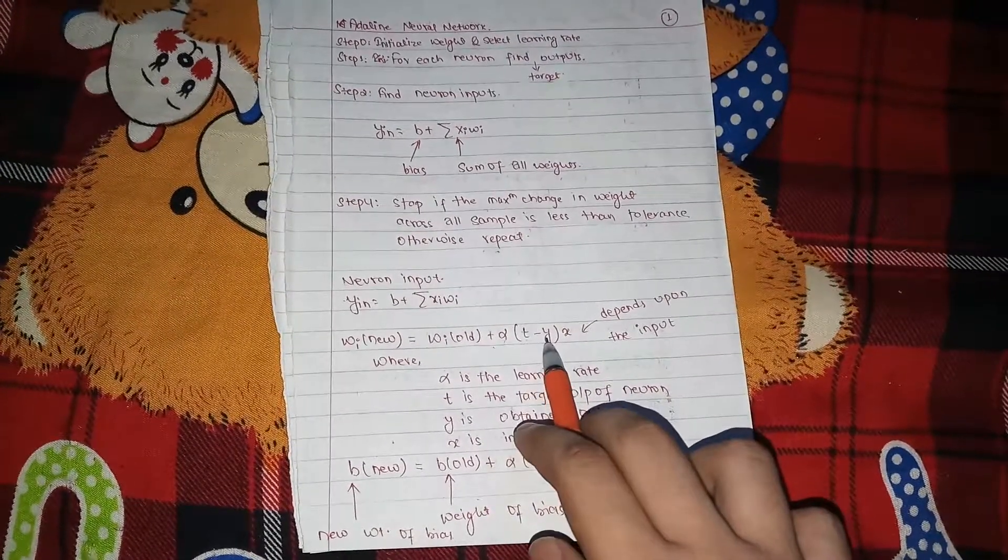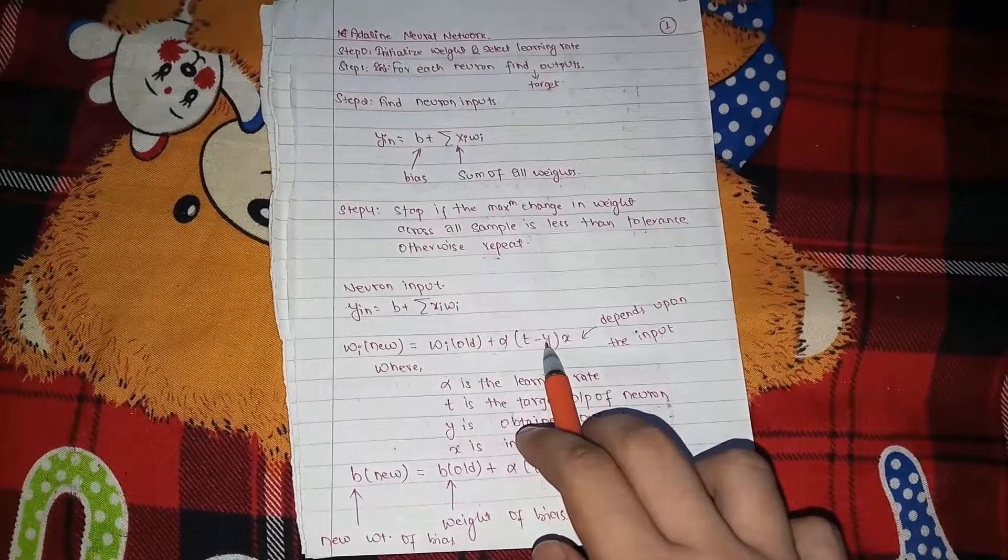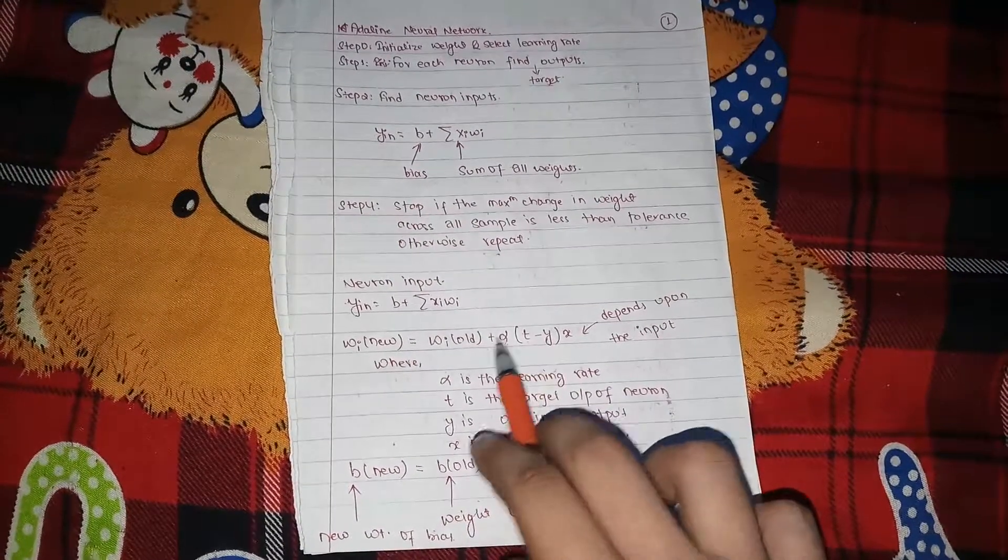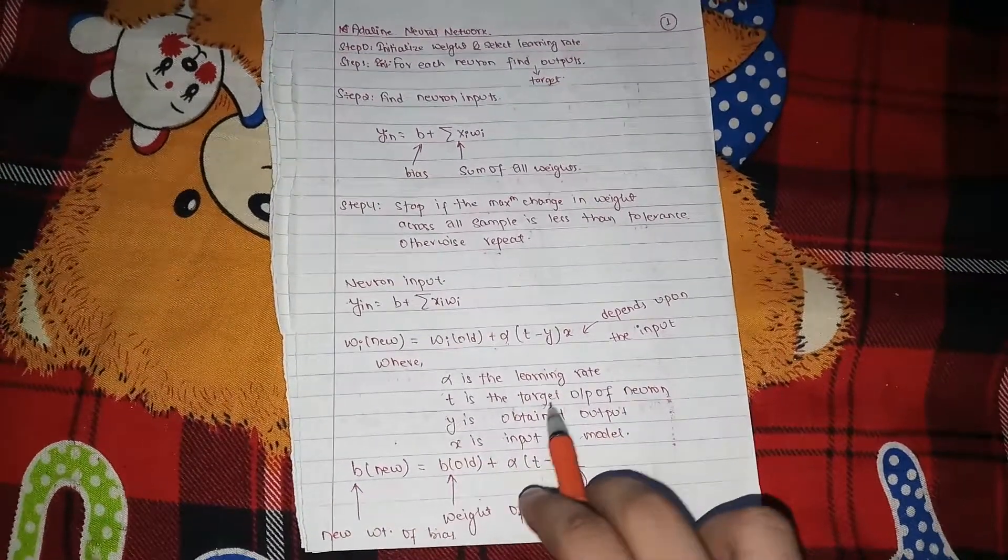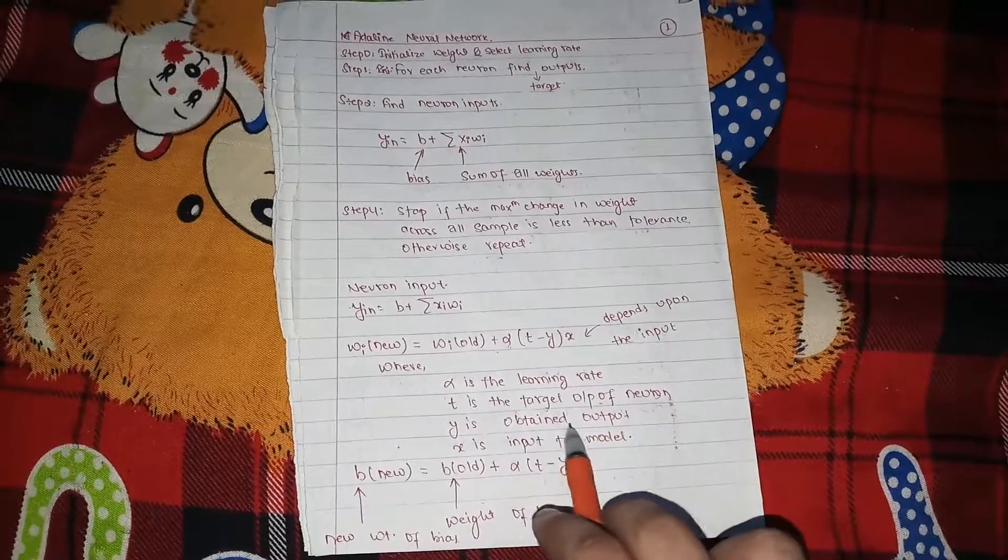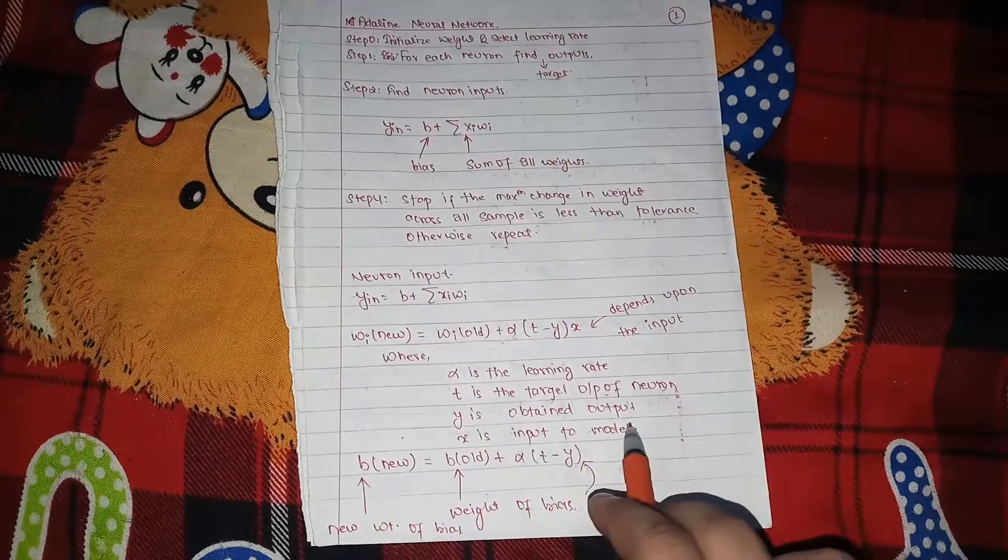T is the target output, Y is the neural output, and alpha is the learning rate. Alpha is the learning rate, T is the target output of the neuron, Y is the obtain output, X is the input to the model.